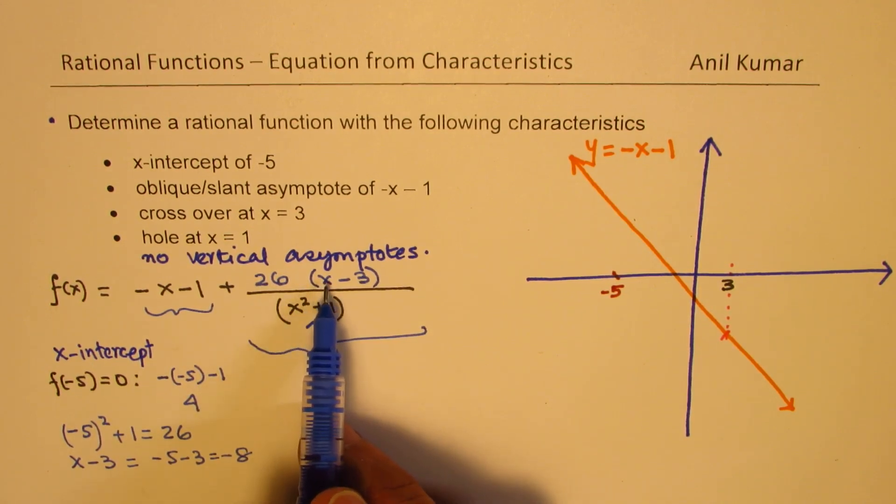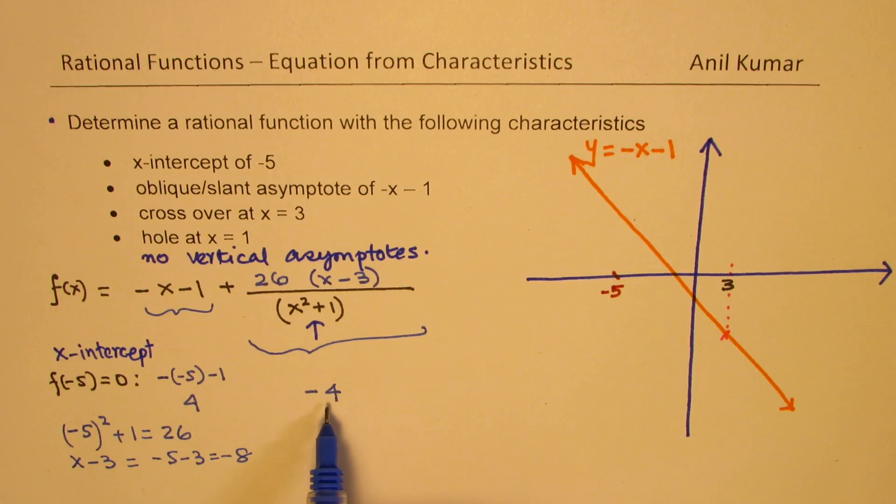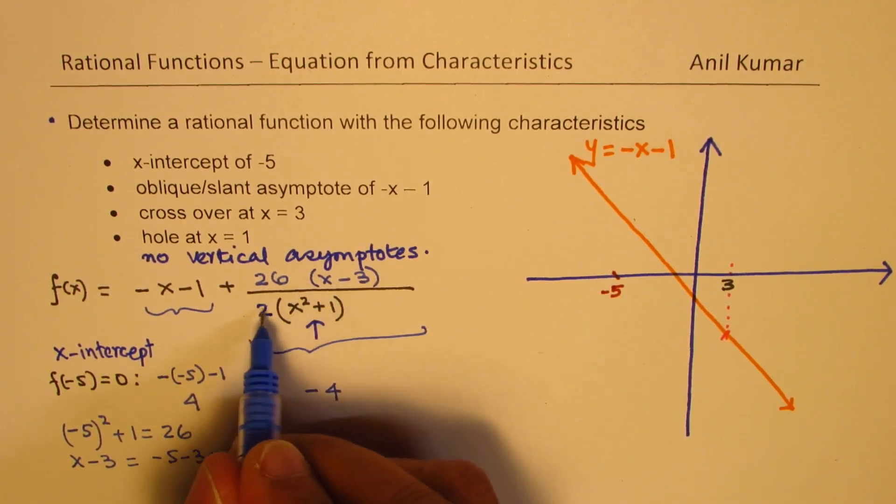So these cancel. Now here I have minus 8. But what do we want? We want minus 4. Since I want minus 4, I'm going to divide by 2. So I get now minus 4.